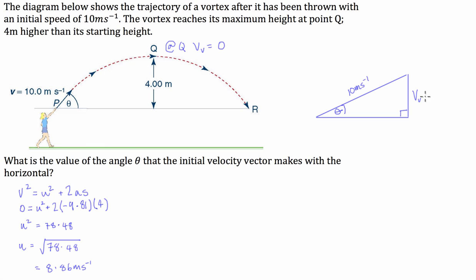So that's our velocity in the vertical direction. So our vertical component is 8.86 meters a second.